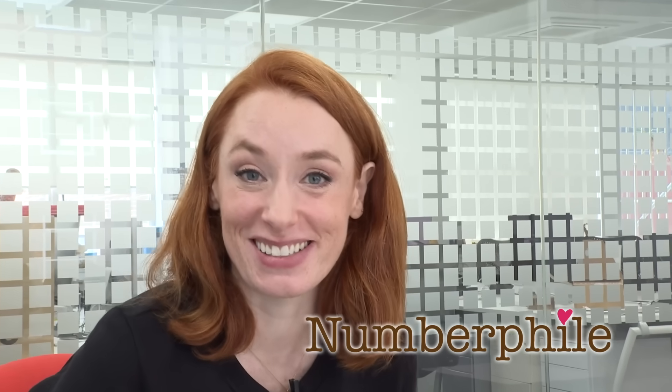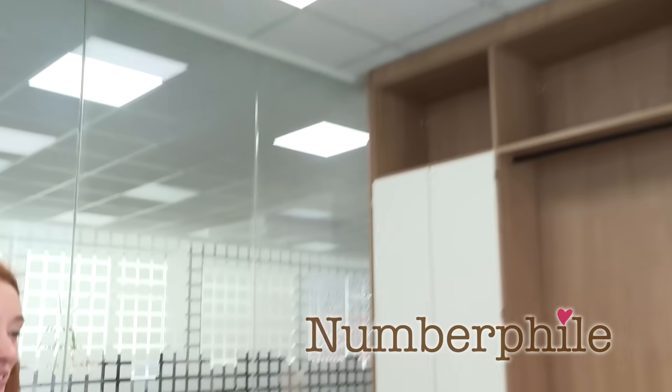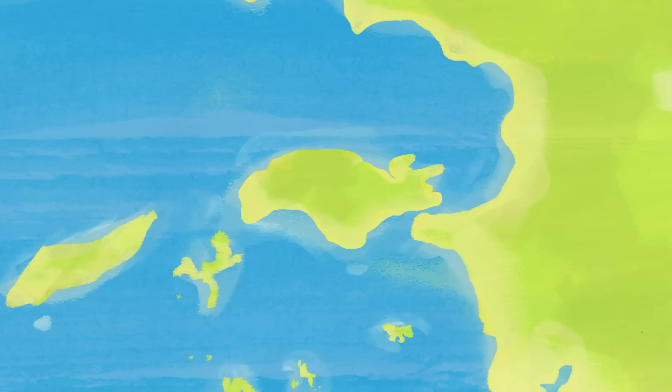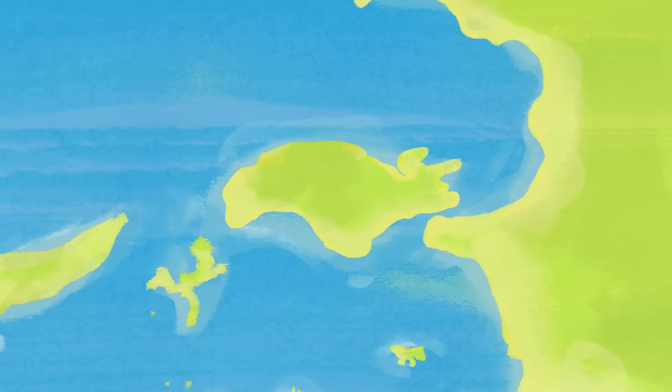You join me today in ancient Greece. It's... wow, this doesn't look like that. It's got good lighting. Thanks. It's not what you're expecting, but it's 6th century BC. And in particular, we're on a Greek island just off the coast of Turkey. It's called Samos.